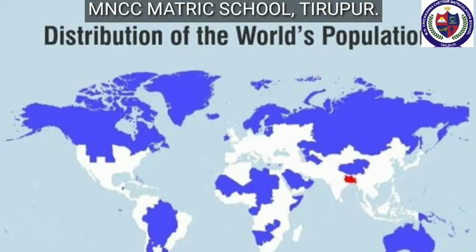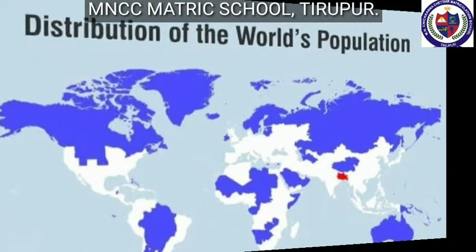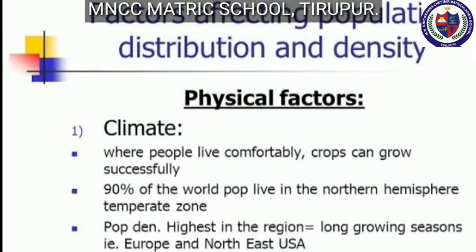Next topic: Distribution of Population. Population distribution refers to the way in which people are spread out across the earth's surface. The world population is not uniformly distributed owing to the following factors: physical factors, historical factors, and economic factors.